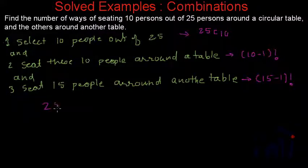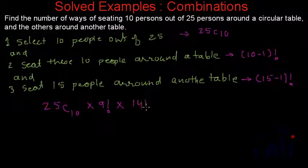to 25C10 multiplied by 9 factorial, 10 minus 1 is 9 factorial, multiplied by 15 minus 1, that is 14 factorial.